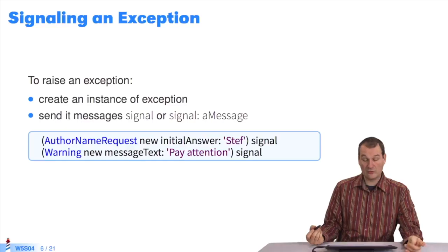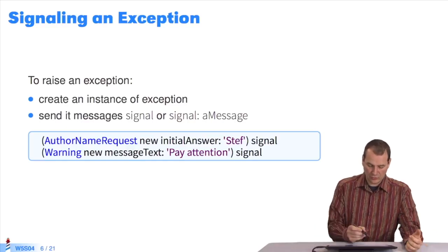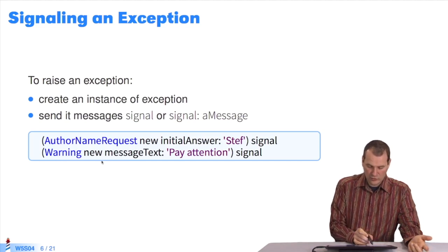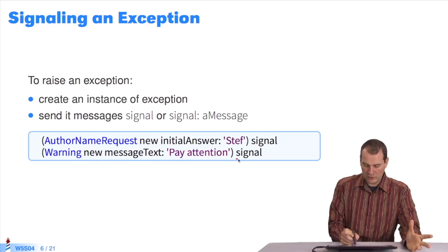How do we raise an exception? Basically, we create an exception and send it the signal message. When we want to give a warning, I do 'Warning new', create an exception, customize it, put the message I want inside, and send the signal message.